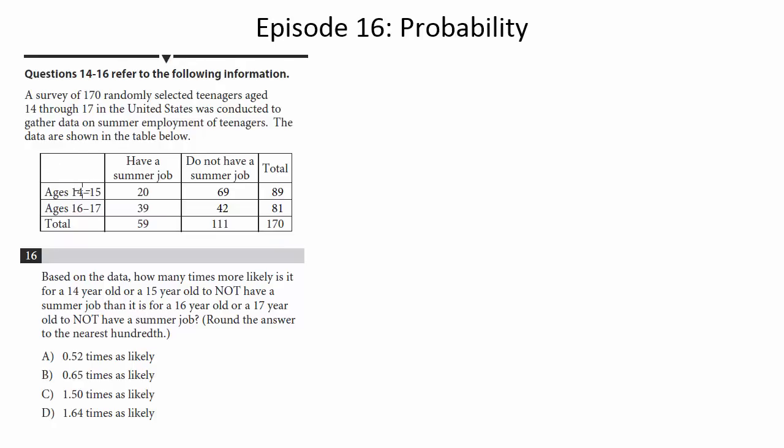The number of 14- to 15-year-olds who don't have a summer job is 69. The number of 16- to 17-year-olds who do not have a summer job is 42. We want to compare the 14- to 15-year-olds without a summer job to the 16- and 17-year-olds without a summer job. So all I need to do is just divide 69 by 42.